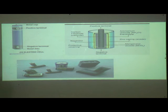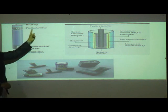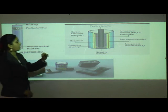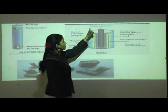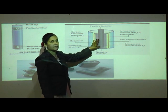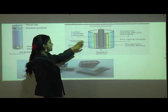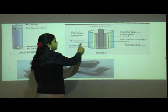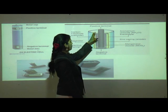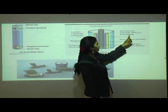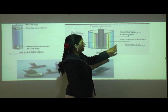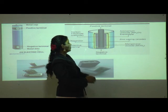Here is a picture of a cell: the metal cap is the positive terminal and the metal disc is the negative terminal. Inside the cell, the chemicals include a carbon electrode (cathode), a separator, a protective covering, ammonium chloride (electrolyte), zinc casing (anode), and manganese dioxide.